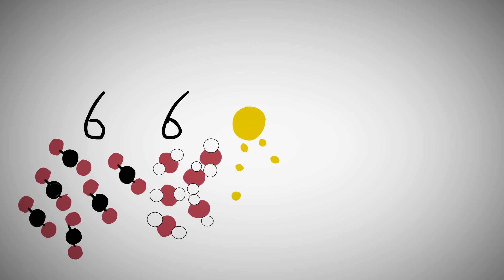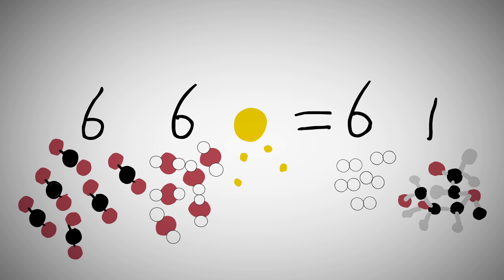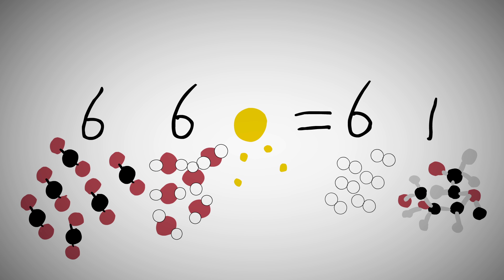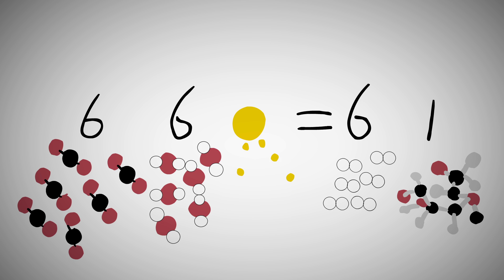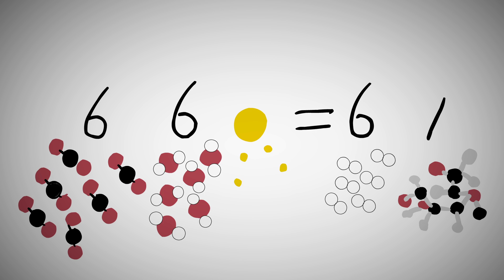This is the formula: six carbon dioxide molecules, six water molecules, and sunlight make six oxygen molecules and one carbohydrate molecule, or sugar.